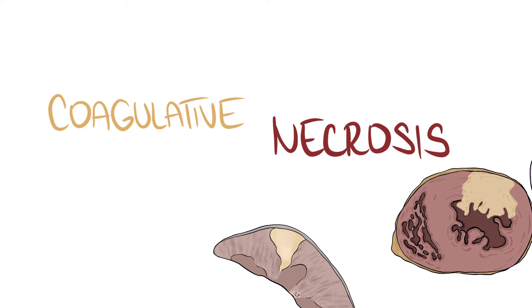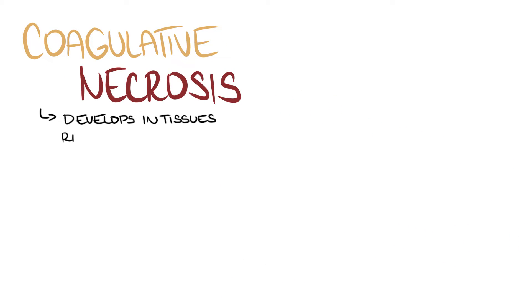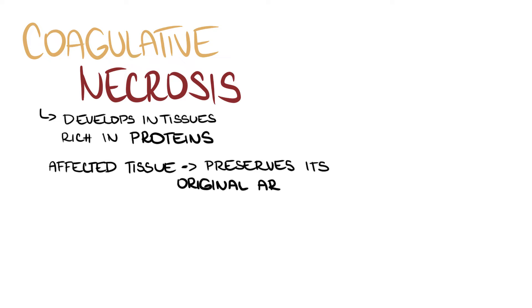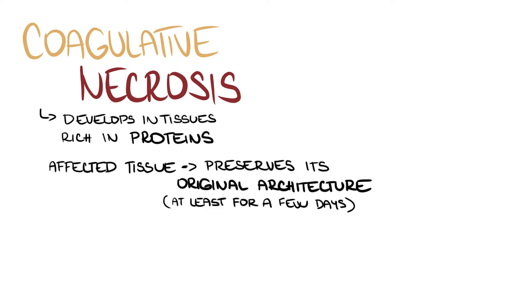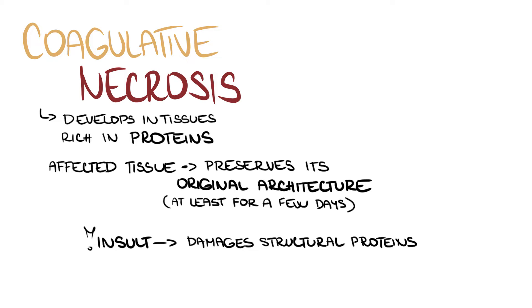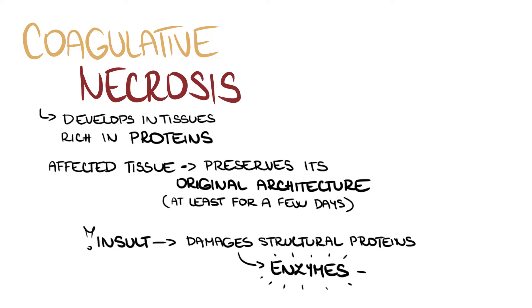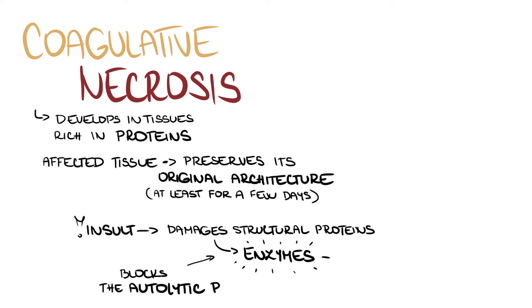Coagulative necrosis usually develops in tissues rich in proteins. In this type of necrosis, the affected tissue preserves its original architecture at least for a few days. The probable underlying mechanism is that the insult damages not only structural proteins of the cells, but also their enzymes, which blocks the subsequent autolytic process.